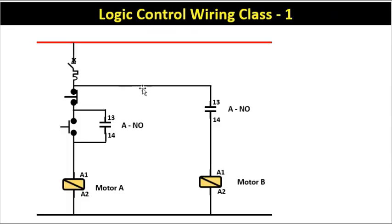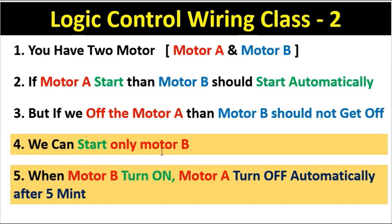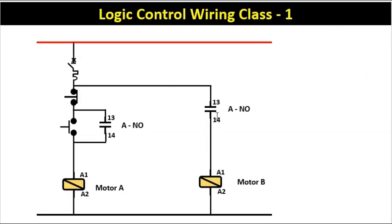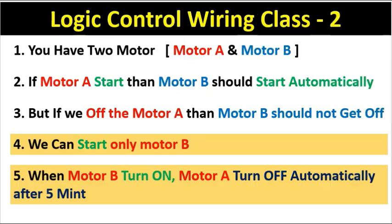Now this circuit diagram is asked to be modified further. Motor B here has no start or stop push button connected. This motor B will start only when motor A starts. After this, it is told that when motor B gets on, motor A should turn off automatically after 5 minutes.